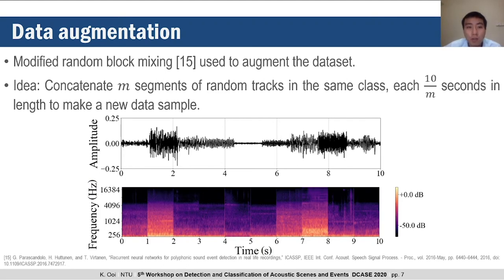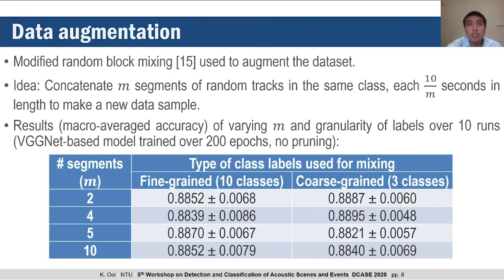We also used a modified version of random block mixing to augment the dataset. The idea is to generate a new track of a given class, say the transportation class, by concatenating m segments of randomly chosen tracks in the same class together. Each of these segments is 10/m seconds in length, to ensure that the length of all augmented tracks is a constant 10 seconds. We also explored the effect of varying m and the effect of varying the granularity of the labels between the fine-grained and coarse-grained classes.